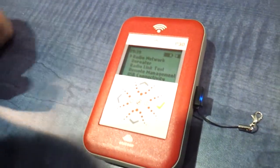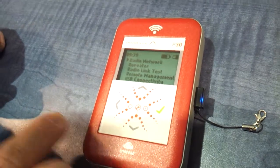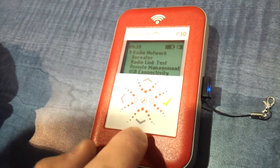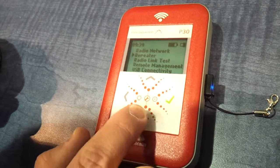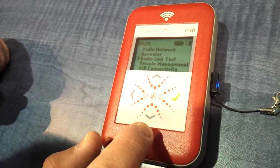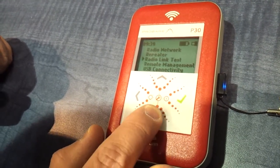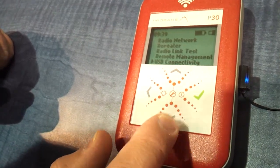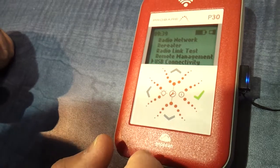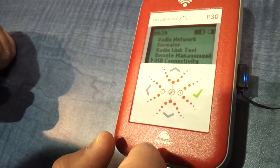We have here different areas. One is the radio network analysis. The next one is using the device as a repeater. You can do radio link test during site survey. You can do remote management and, of course, you can connect it via USB to a PC and a software.